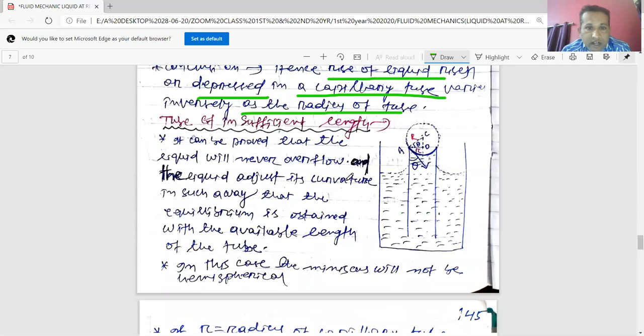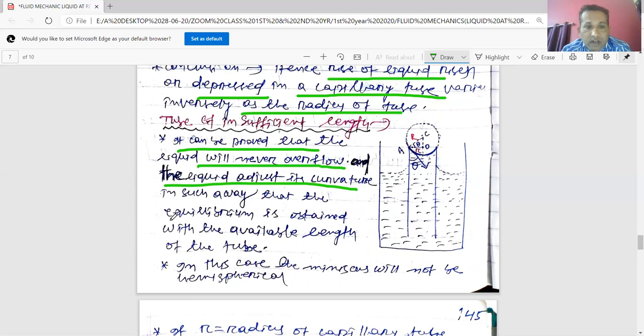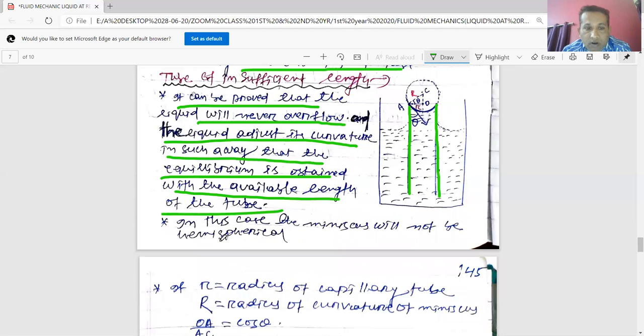If the tube is of insufficient length, it can be proved that the liquid will never overflow and the liquid adjusts its curvature in such a way that the equilibrium is obtained with the available length of the tube. If you cut this capillary tube, the liquid will not overflow. So it adjusts its radius. In this case, the meniscus will not be hemispherical. It is less than hemispherical.